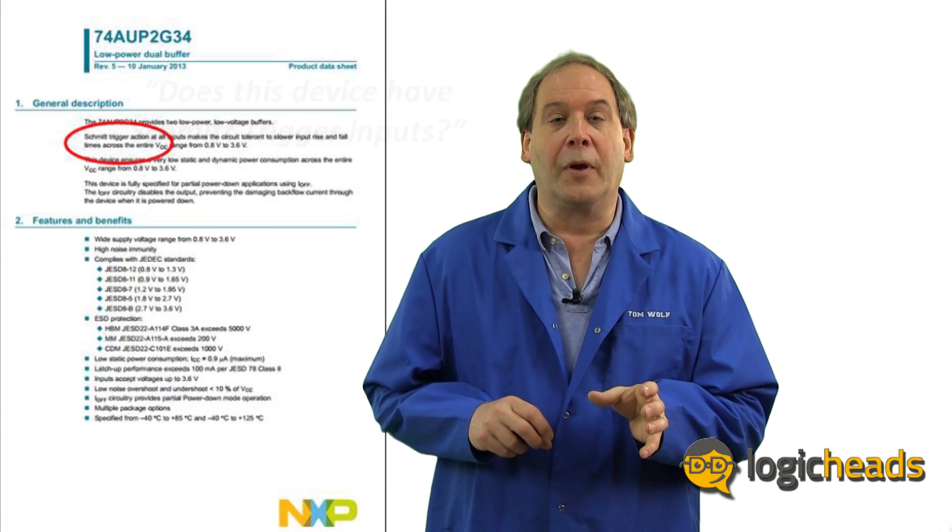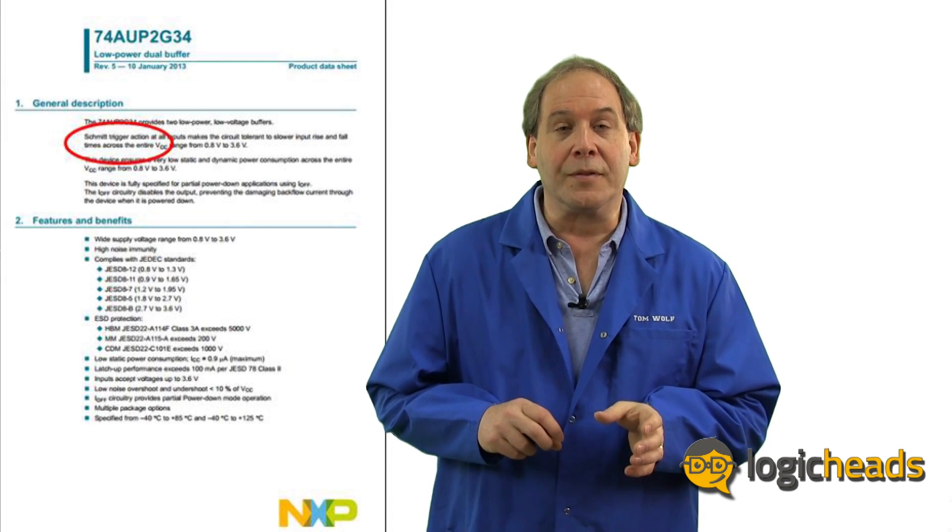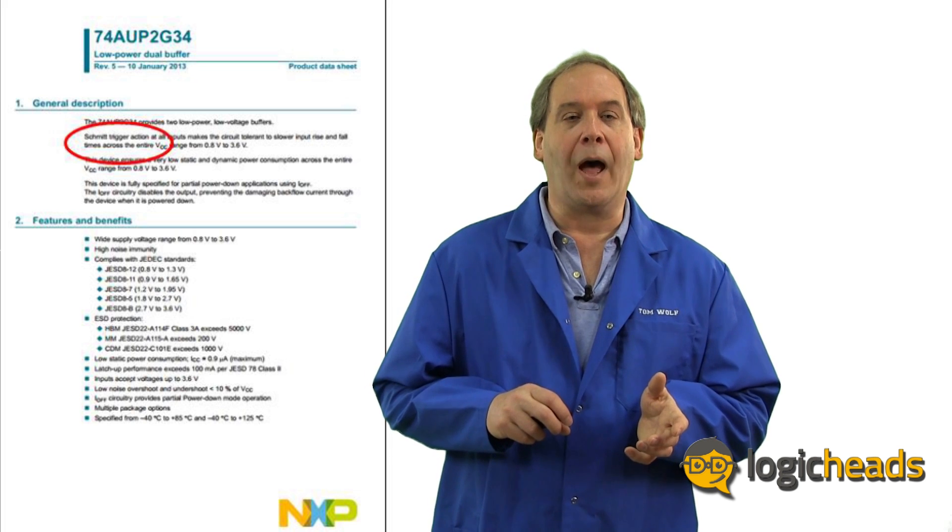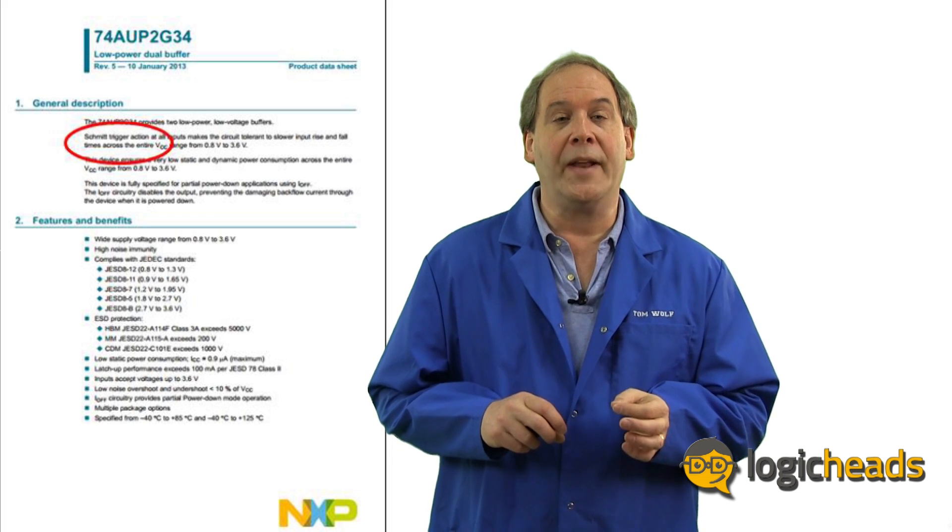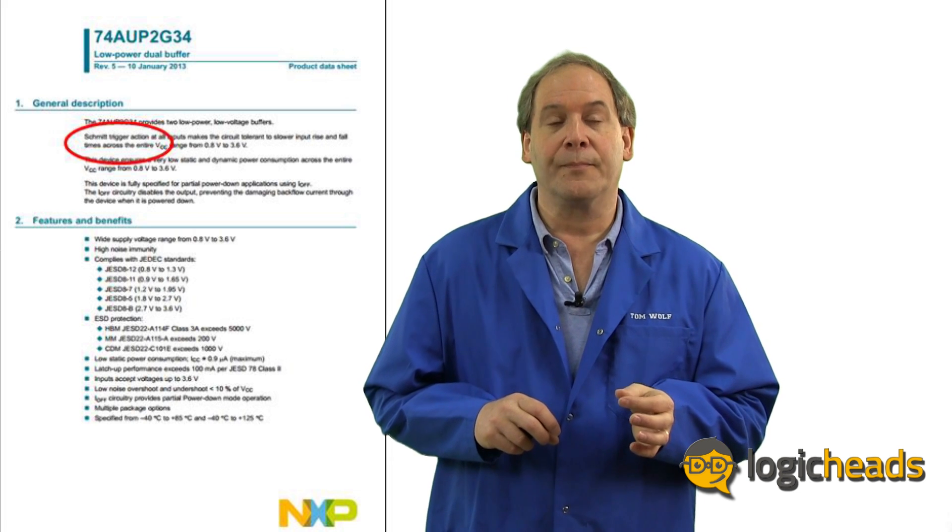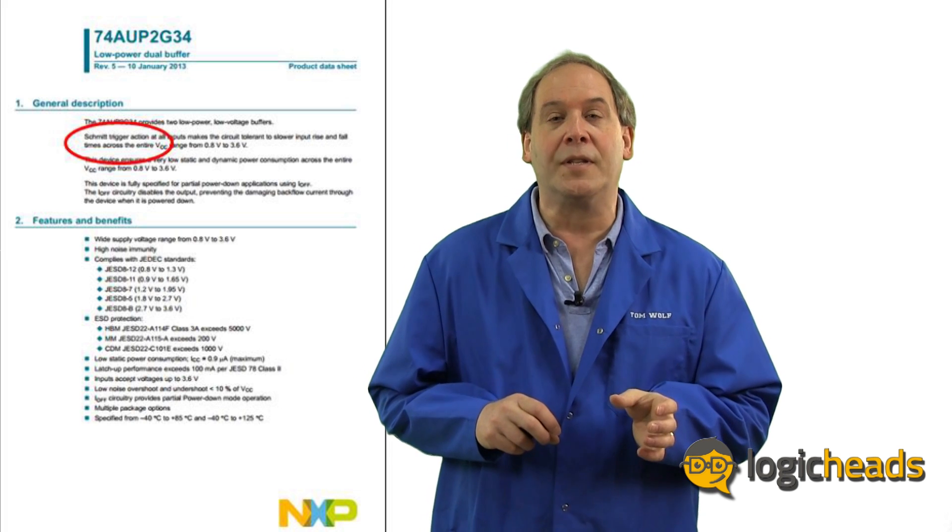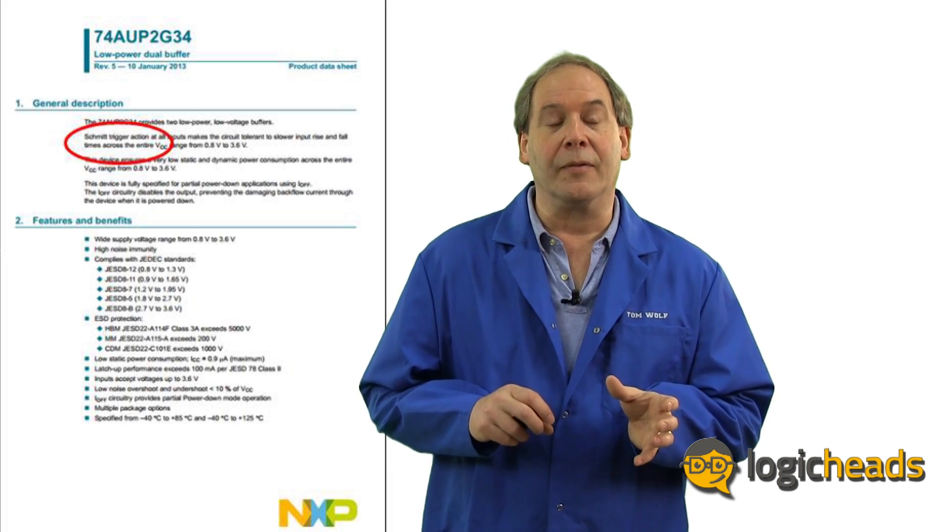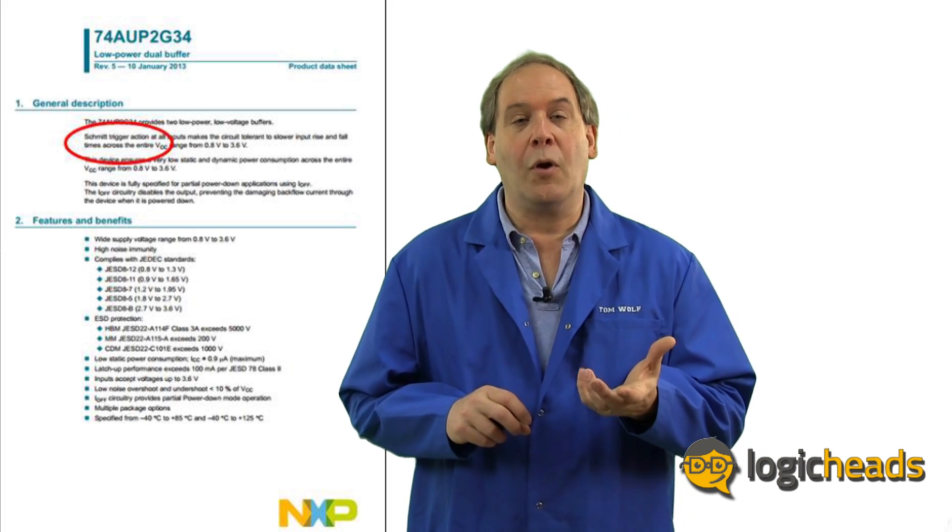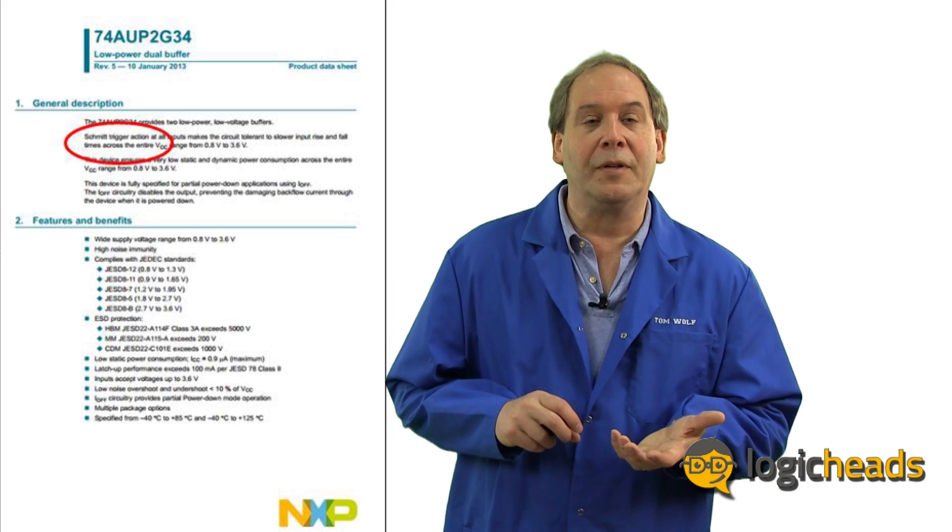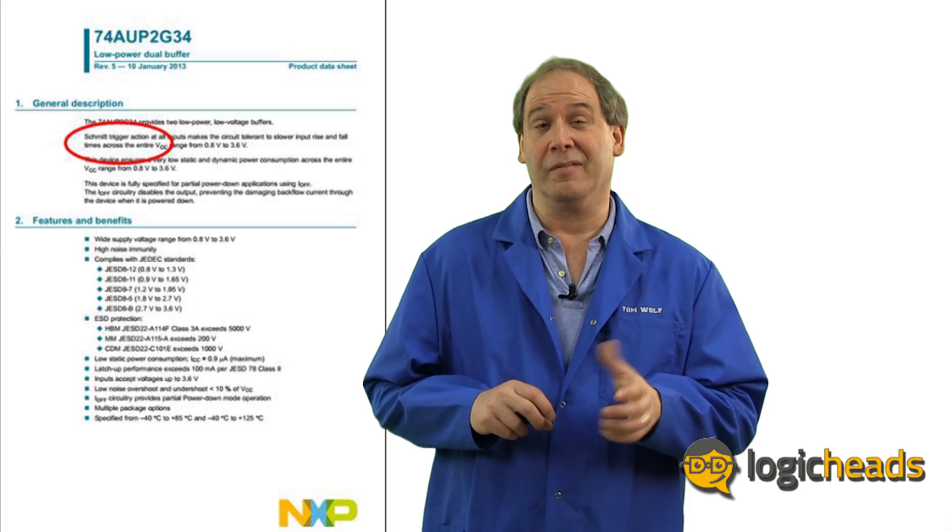If you look right here on the front page, you will see that it says Schmitt trigger actions. Is this the answer? Well, no, it's not. You see, there's a difference between a true Schmitt trigger and a Schmitt trigger action device. Action really just means that the input threshold voltages have been adjusted to make them less sensitive. But if you look further down in the datasheet, you'll find that there is no information on hysteresis, which means that this particular device does not have true Schmitt trigger inputs. Just action. Got it?